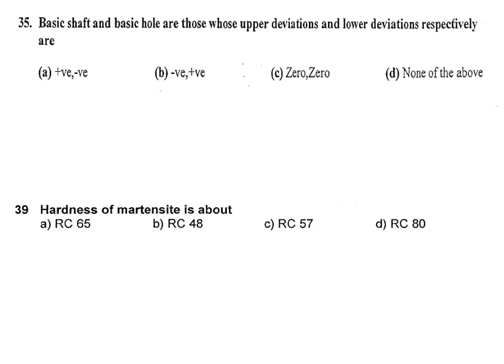Basic shaft and basic hole are those whose upper deviation and lower deviation respectively. This question was asked in IES also so many times. In GATE also this question was asked. Basic shaft whose upper deviation is zero and basic hole whose lower deviation is zero. So answer is C, zero, zero. This is very important.